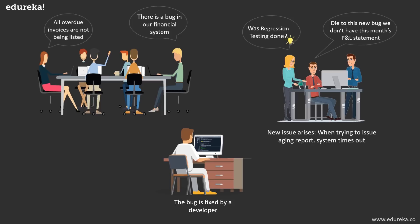The accounting department is really upset. The company doesn't know if it's making or losing money. The accounting manager contacts the software development manager seeking a remedy. It turns out the new code was only tested on a small database, but when applied to production data — which is usually very large — it didn't work as expected. If the fix had been incorporated into a system-wide regression test using a copy of production data, the issue would likely have been caught before release.